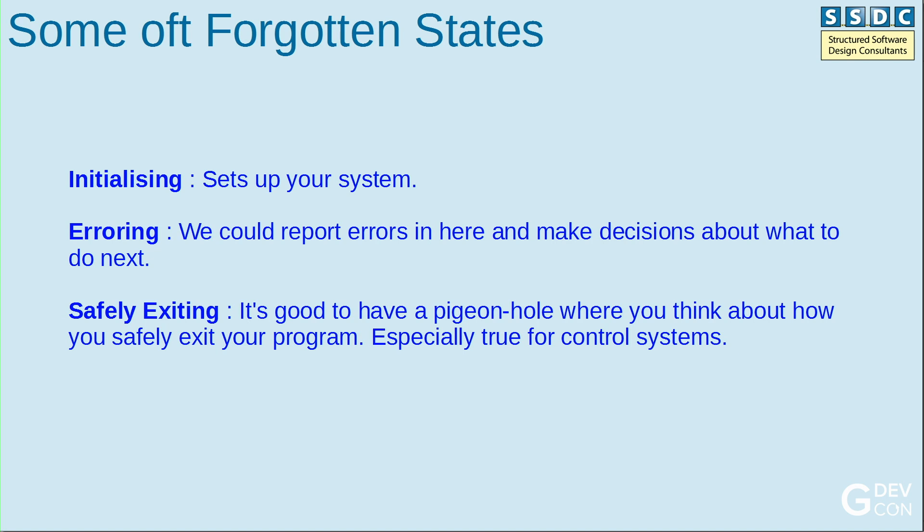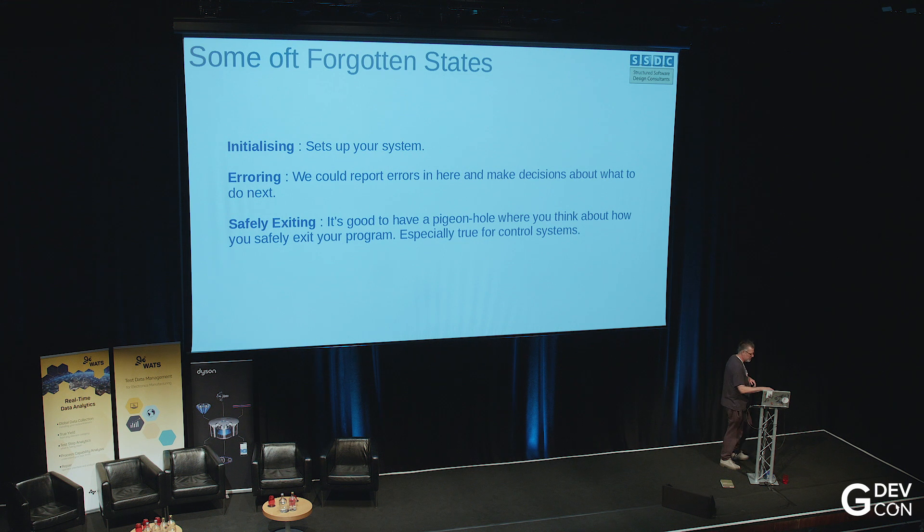Some oft-forgotten states: when you model your state transition diagram, 'erroring' should be there - your system is erroring, that's a state. I do a lot of safety systems, so 'safely exiting' is a nice one. That way your nuclear reactor is going to shut down nicely when you press stop.